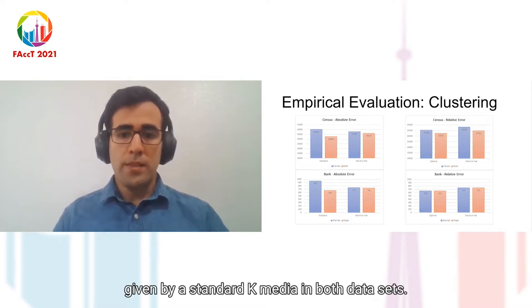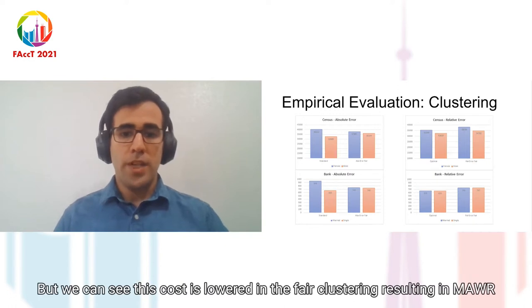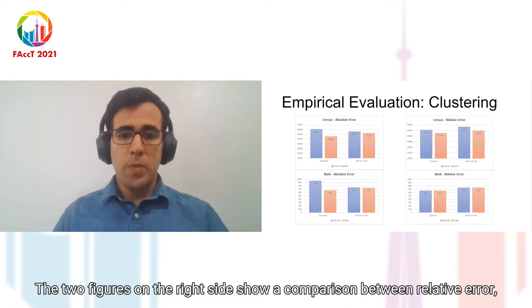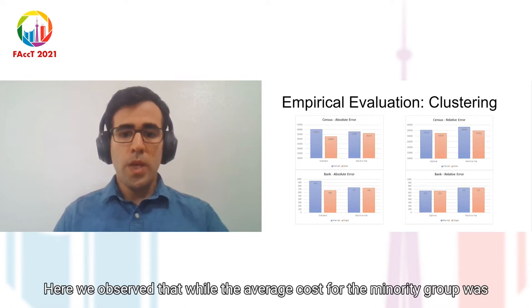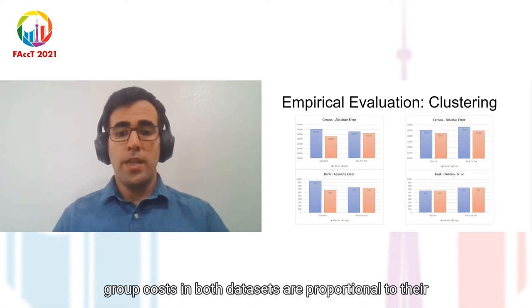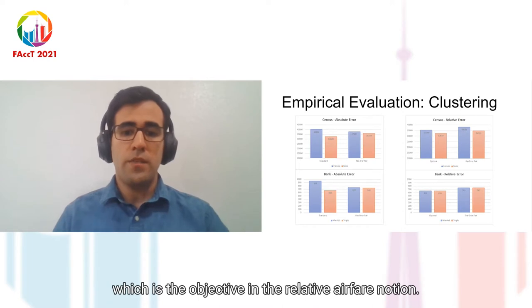But we can see this cost is lower in the fair clustering resulting in more equitable costs across the board. The two figures on the right side show a comparison between relative error fair clustering and group optimal costs. Here we observe that while the average cost for the minority group was lowered compared to its corresponding value in the standard K median clustering, group costs in both data sets are proportional to their optimal cost, which is the objective in the relative error fair notion.